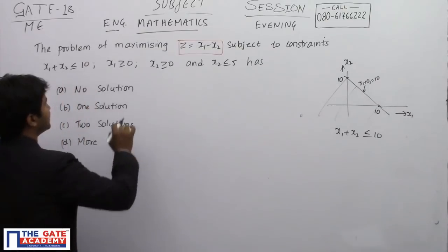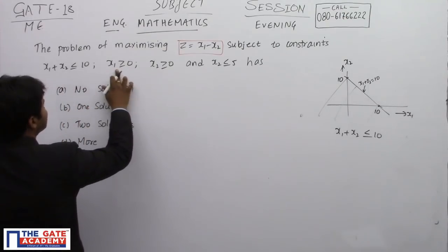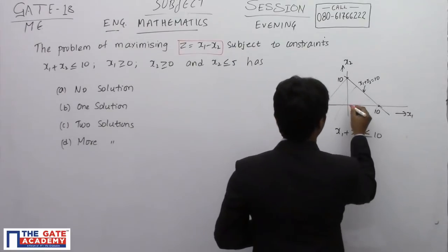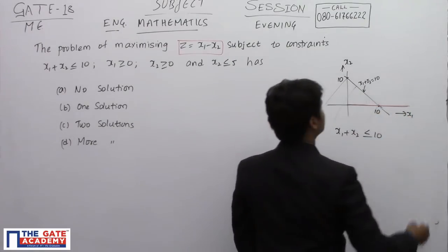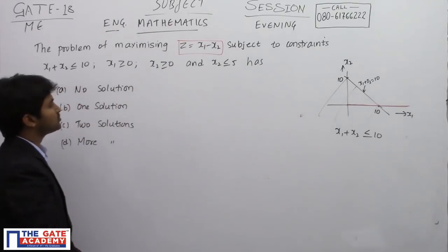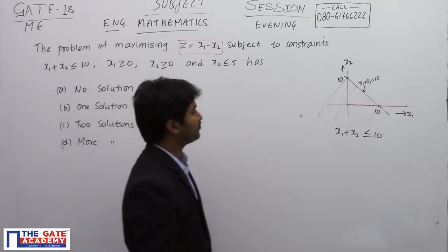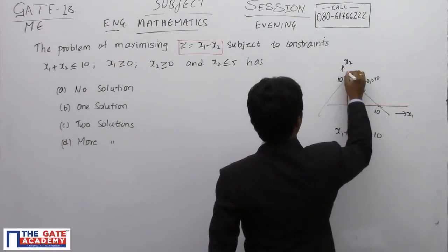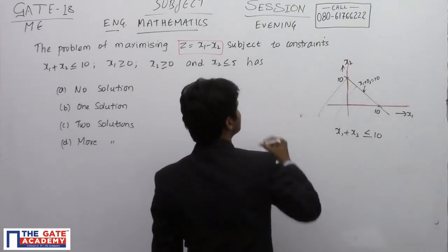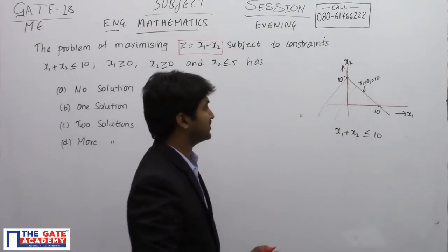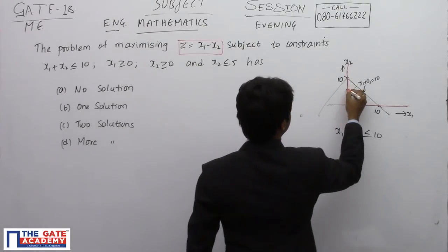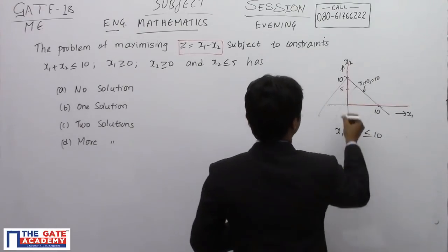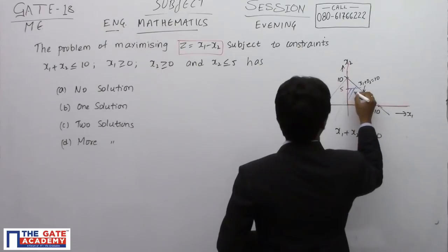There are more constraints. The value of x1 is greater than or equal to 0, and the value of x2 is greater than or equal to 0. It is also given that x2 is less than or equal to 5. The line x2 equals 5 is located here, so the value of x2 is bounded above by 5. This defines our region.